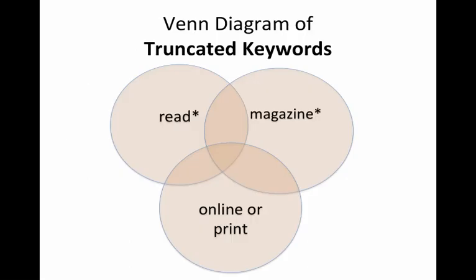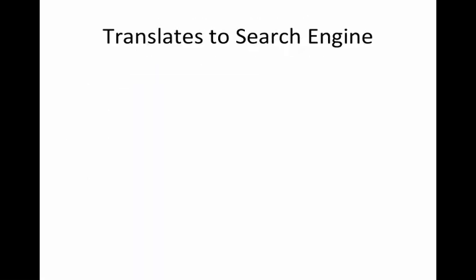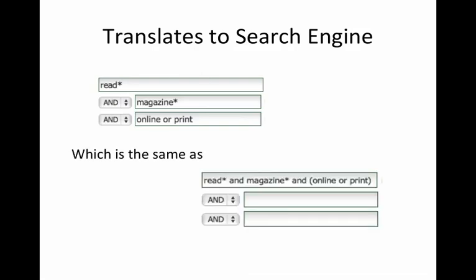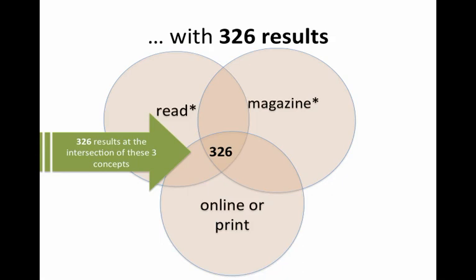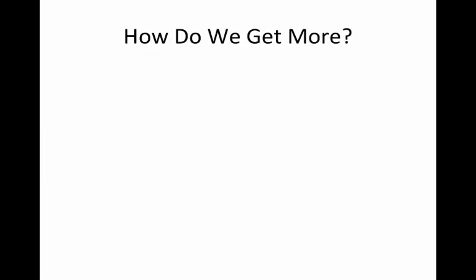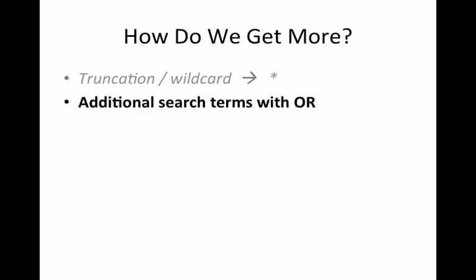Here's the Venn diagram with the truncated keywords, and how it translates to the search engine — you're just putting the asterisk at the end of the word you want to truncate. This does not work in Google or Google Scholar, just FYI. It works in pretty much all library databases. When we do that, we get 326 results. That's a lot, but I'm still thinking we might want to try to get even more articles.